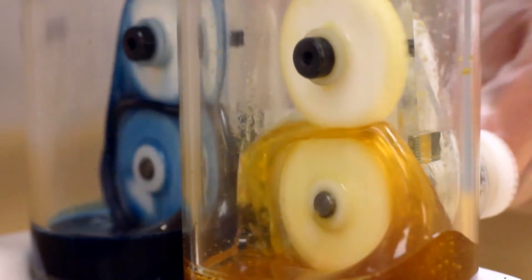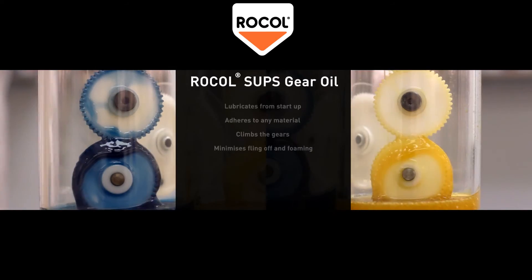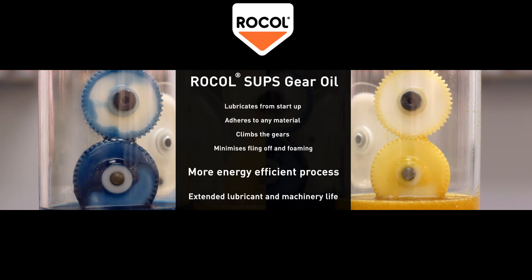The result of using Roco Gear Oils with the Startup Protection System is a more energy-efficient process and extended lubricant and machinery life.